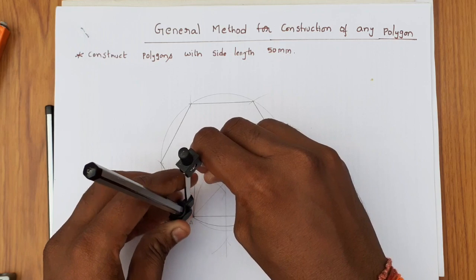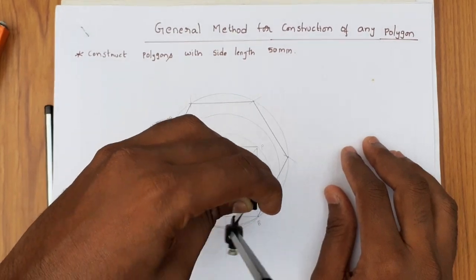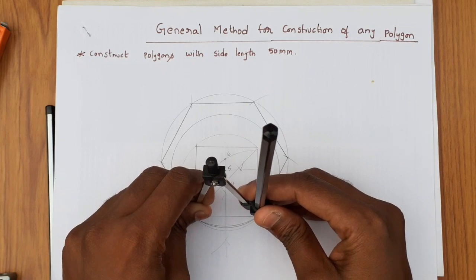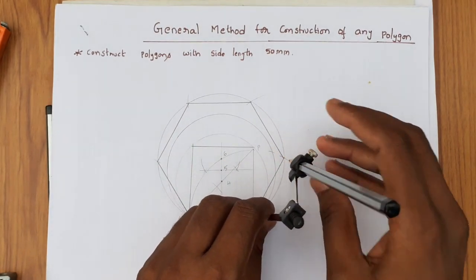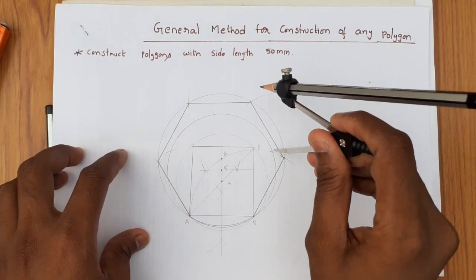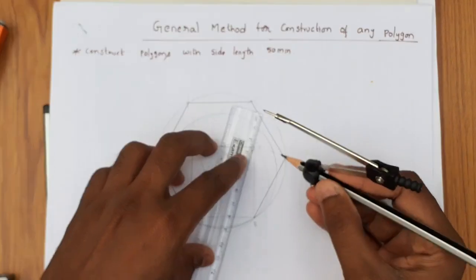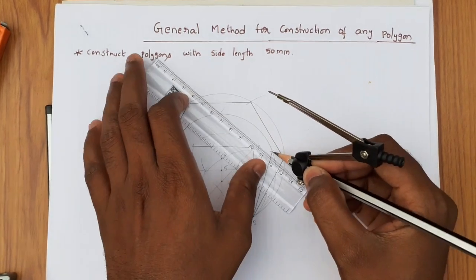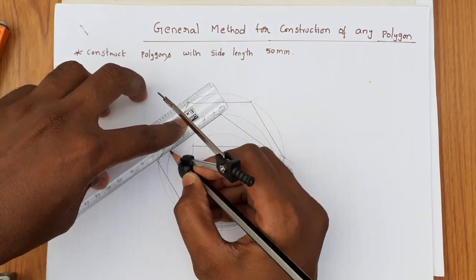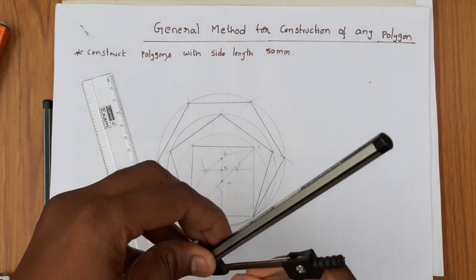With 5 as center, draw a semicircle. Now cut the semicircle with AB radius to finally get a pentagon.